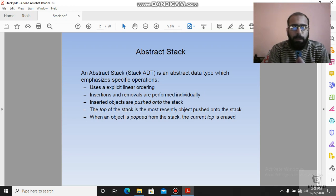So basically we have these basic operations that are performed under the abstract data type of abstract stack. We have explicit linear ordering because we have a sequence in the stack for data insertion, that is last in first out. The last item that comes into the stack will be operated first, will be the first result or the first deletion. Insertion and removal are performed individually - we cannot do insertion and deletion at the same time. Inserted objects are pushed onto the stack. The top of the stack is the most recently added object, exactly as last in first out.